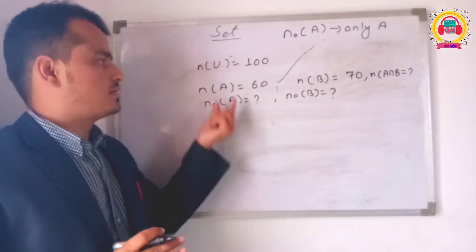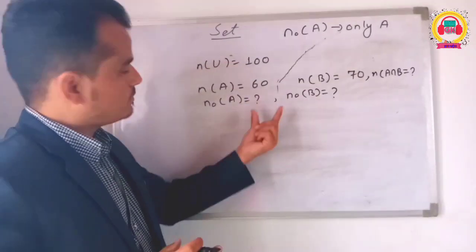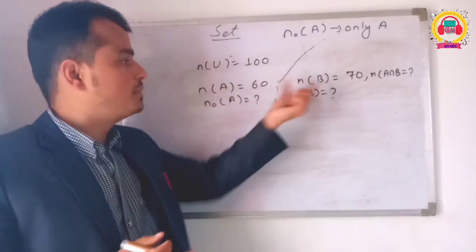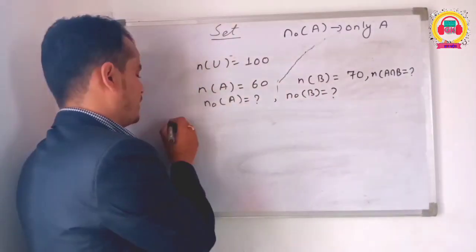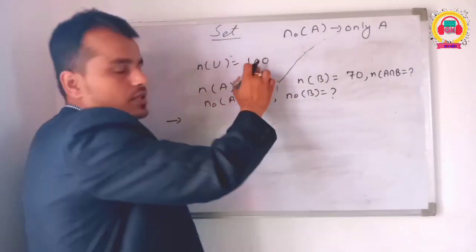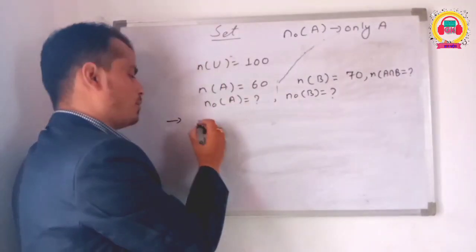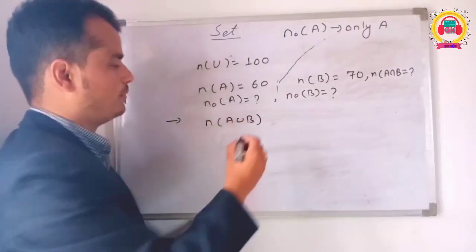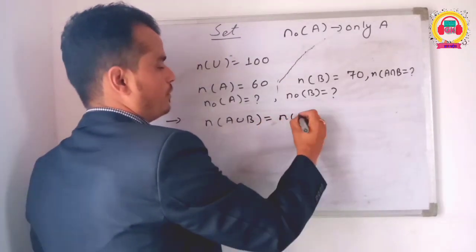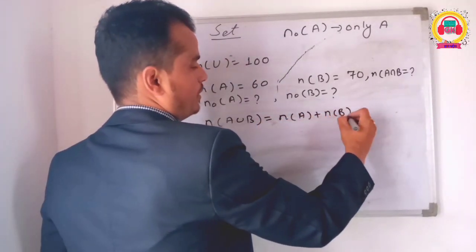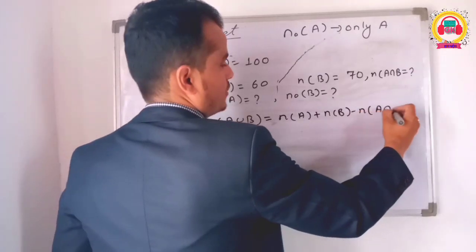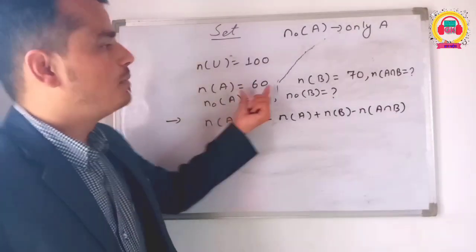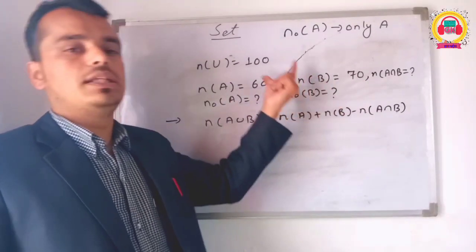We can use the formula. Number of A union B equals number of A plus number of B minus number of A intersection B. We have to do A union B. If we have a complement, we use the complement formula.